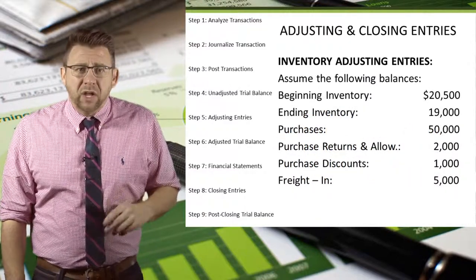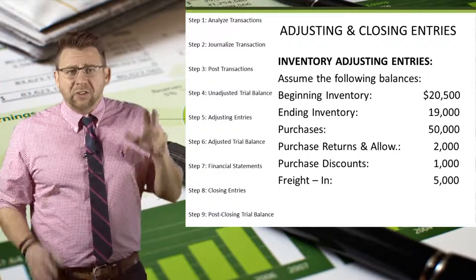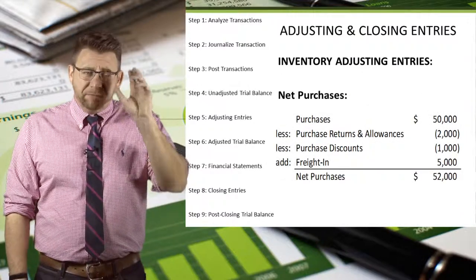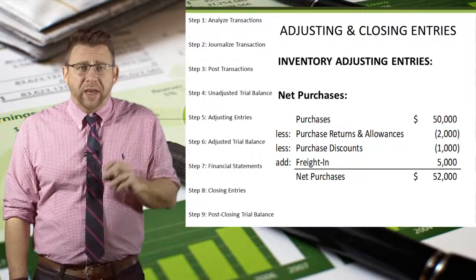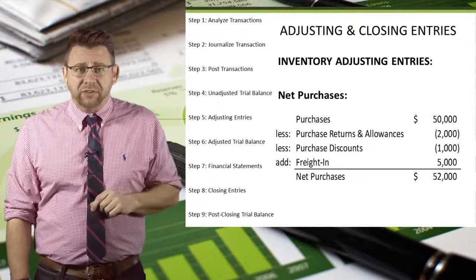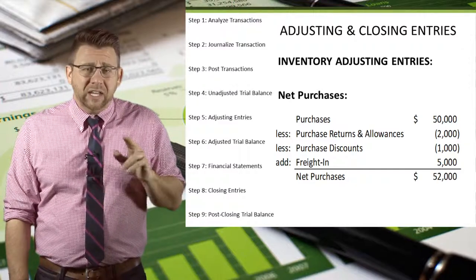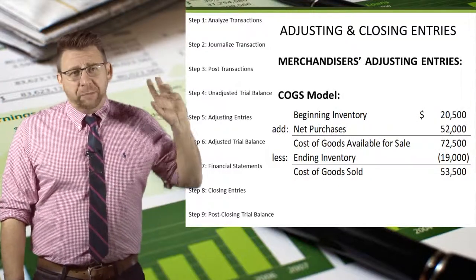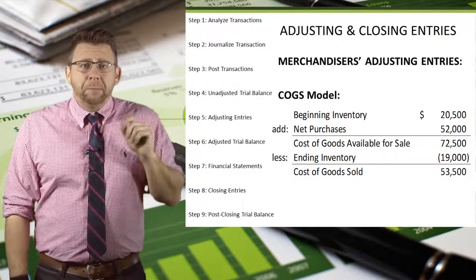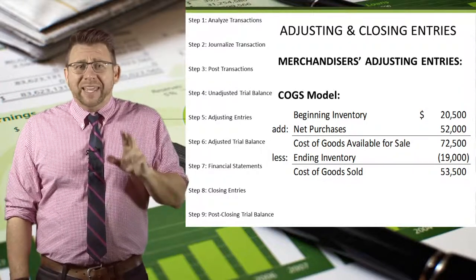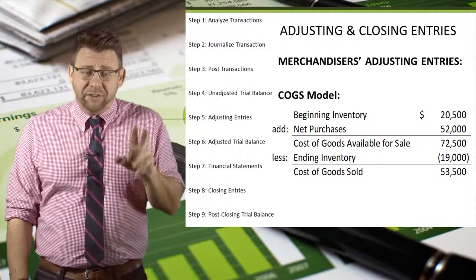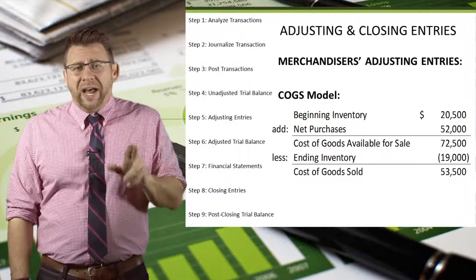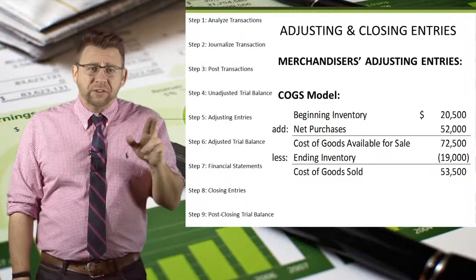Let's look at an example. Assume the following account balances. Purchases of $50,000 minus purchase returns and allowances of $2,000, minus purchase discounts of $1,000, plus freight in of $5,000, equals net purchases of $52,000. Beginning inventory of $20,500 plus net purchases of $52,000 equals cost of goods available for sale of $72,500. From that we subtract ending inventory of $19,000 to arrive at cost of goods sold of $53,500.